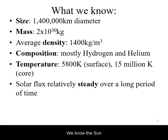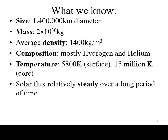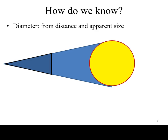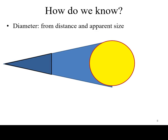We know the Sun is about 1.4 million kilometers in diameter. This is over a hundred times the diameter of the Earth. Because we have never travelled to the Sun to measure it, we need to deduce its size indirectly.